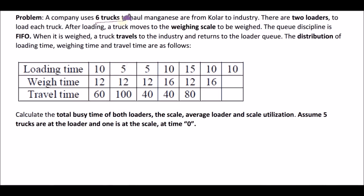A company uses six trucks to haul manganese. There are two loaders to load each truck. After loading, a truck moves to the weighing scale to be weighed. The queue discipline is FIFO — first in, first out. When weighed, a truck travels to the industry and returns to the loader queue. The distribution of loading time, weighing time, and travel time are given. We need to calculate the total busy time of both loaders, the scale, the average loader busy time, and scale utilization.